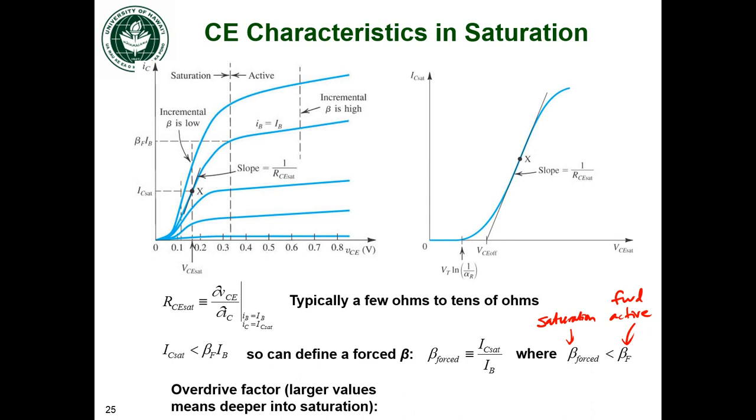I also want to define something called the overdrive factor. The larger the overdrive factor just means that you're going to force the transistor to be operating more and more in saturation. This overdrive factor is going to be defined as the forward active beta divided by beta forced. Or, if you put in the definition of beta forced, then you can also relate this to the base current.